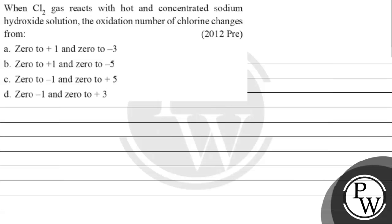Hello Bachchan, let's read this question. Question says: when chlorine gas reacts with hot and concentrated sodium hydroxide solution, the oxidation number of chlorine changes from — हम से पूछा है कि chlorine gas जब basically react करती है hot and concentrated sodium hydroxide solution से तो oxidation number of chlorine changes from Option A,